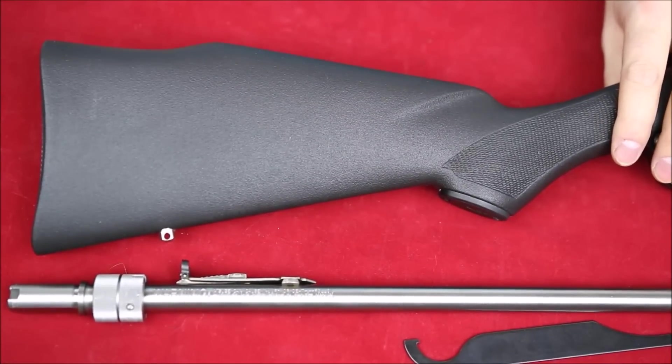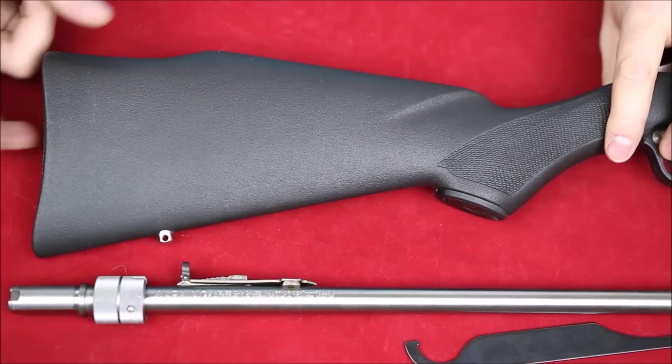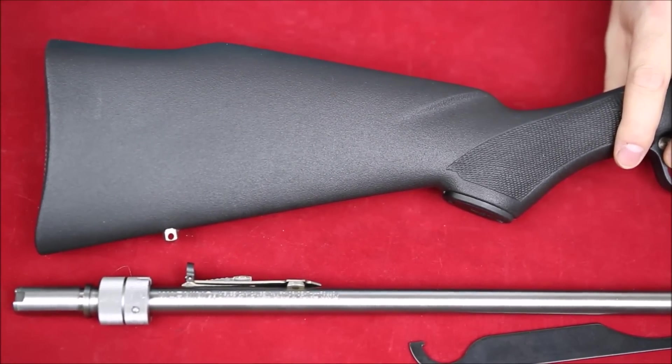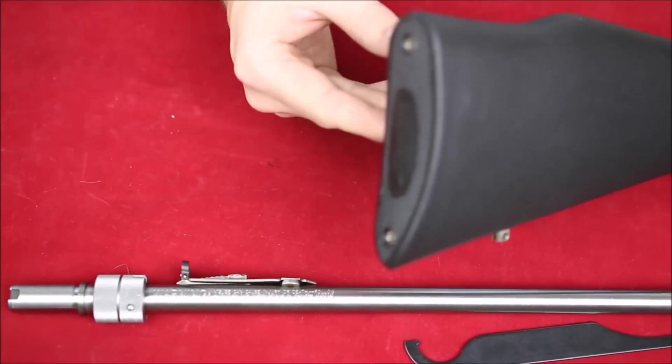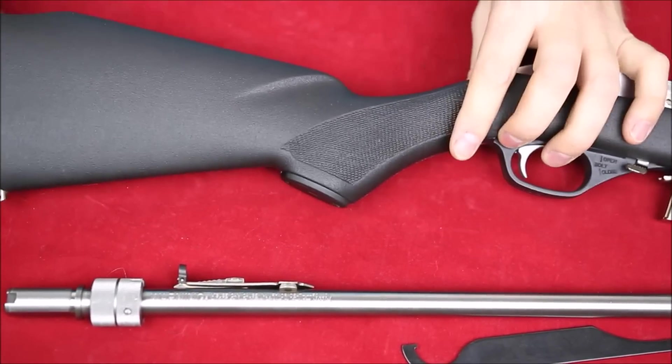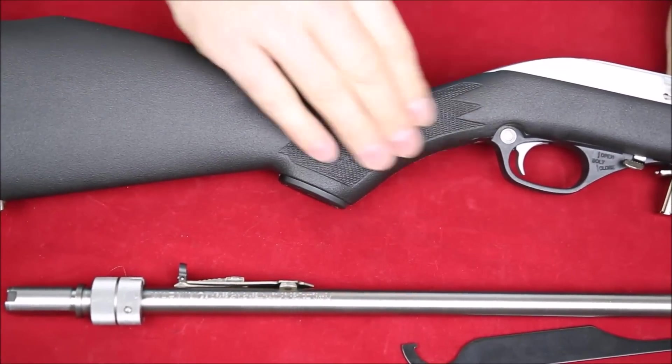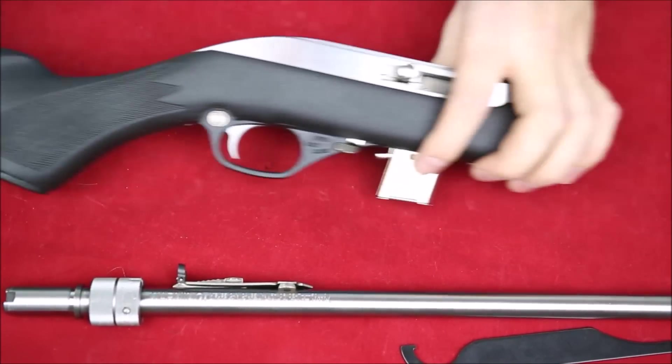The rear of this Marlin Papoose is very simple. It's got no add-on butt plate, just the stock molded itself. It does have this one that's inset just to cover the hole from the molding process. Some very basic checkering that's kind of molded in here, nothing too fancy.